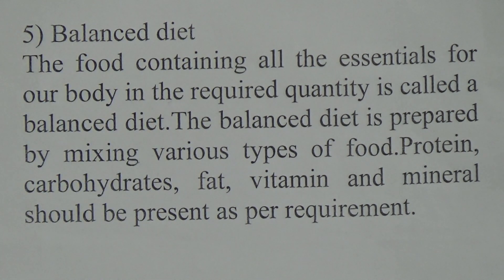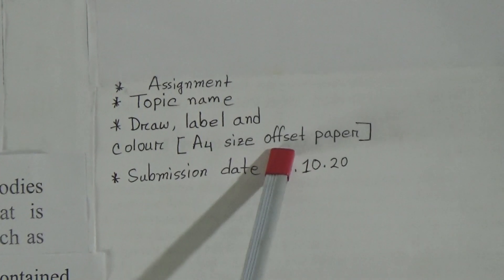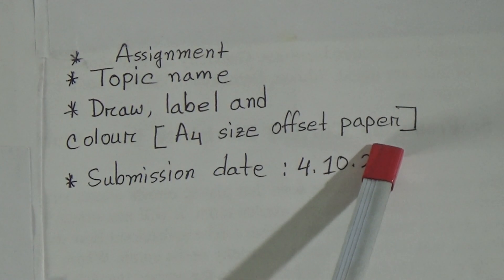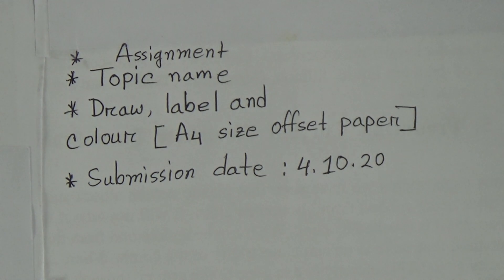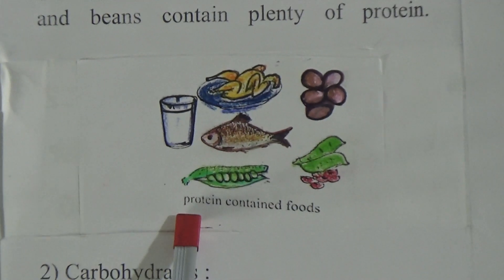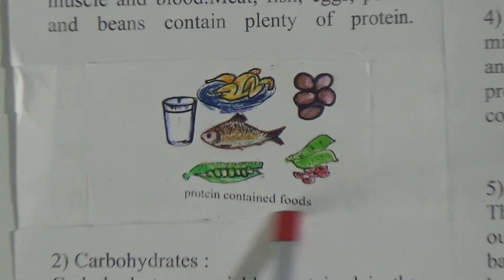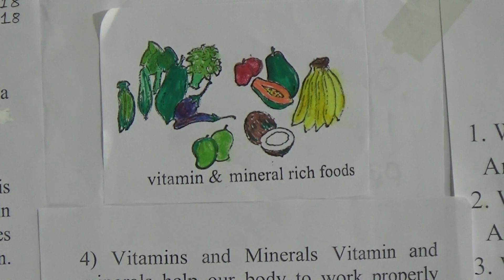Students, you have to make this assignment on A4 size offset paper. Write the points and draw the pictures, then color them. Also label the pictures — that means you have to write: protein-containing foods, carbohydrate-containing foods, fat-containing foods, and vitamin and mineral rich foods.